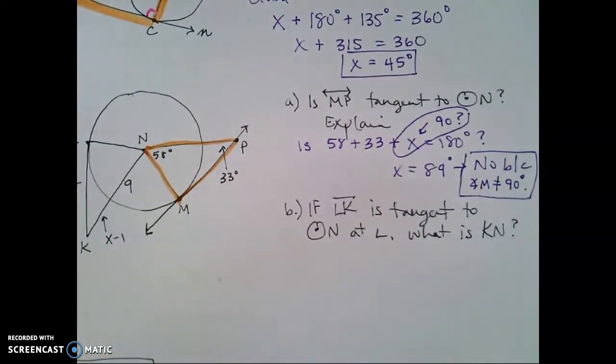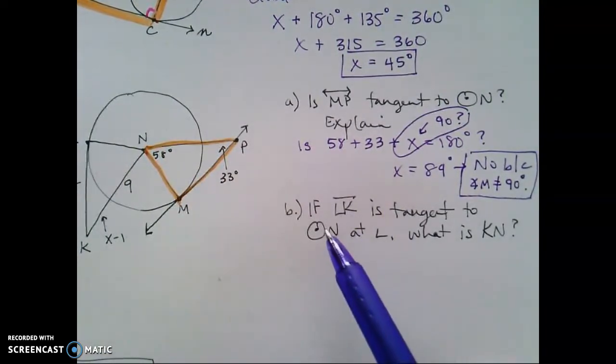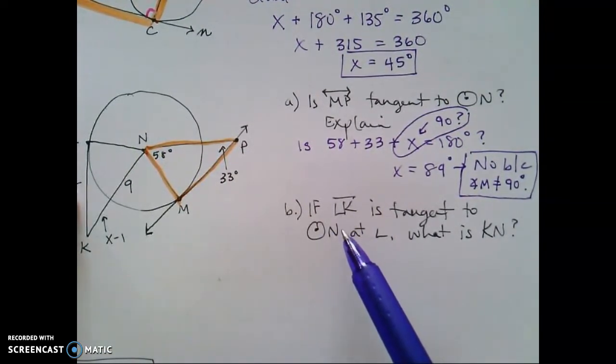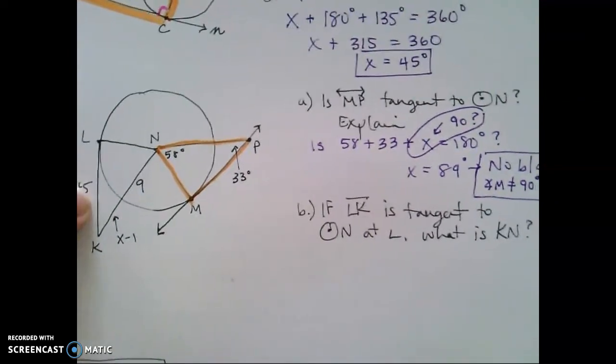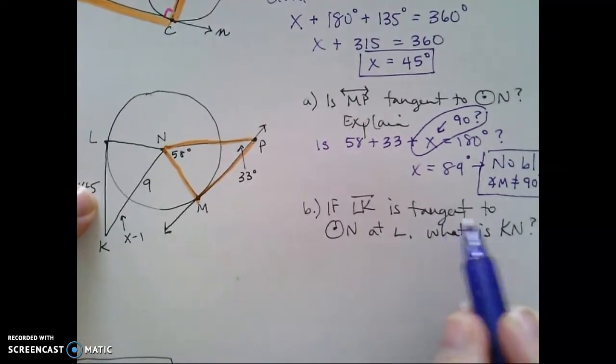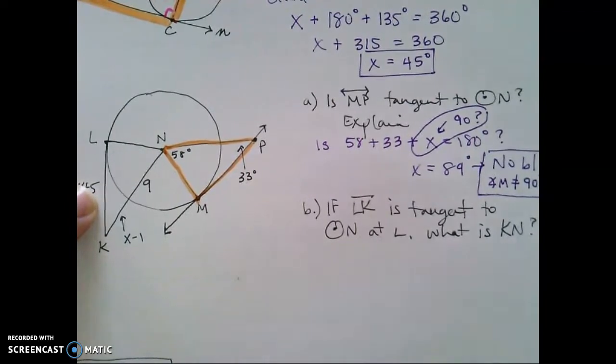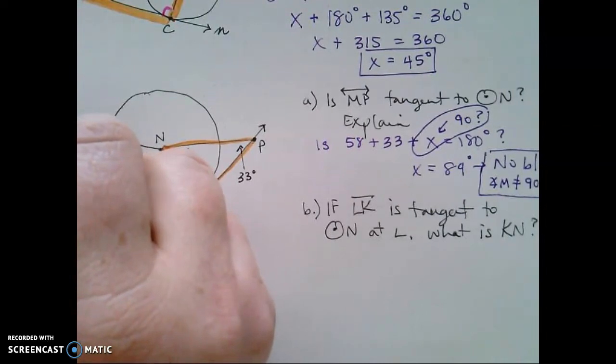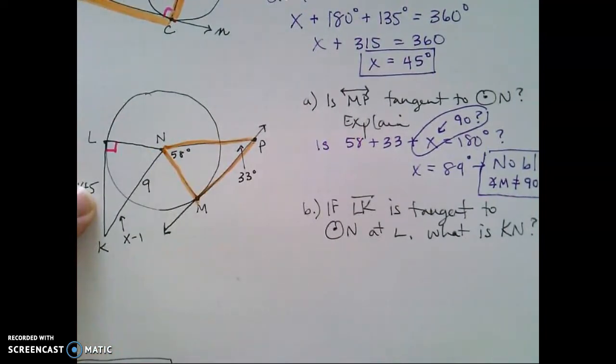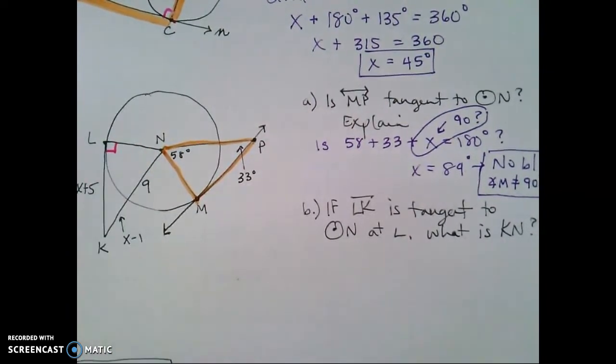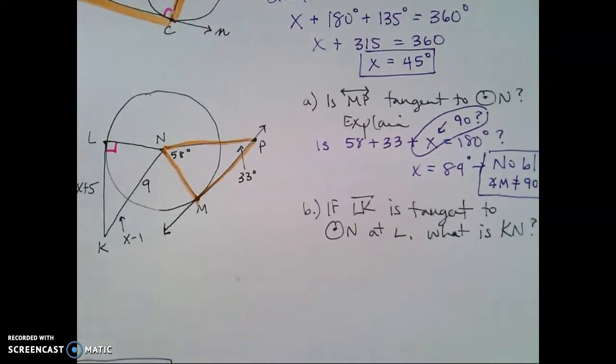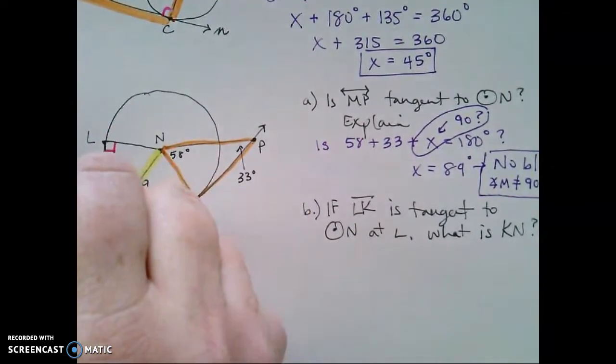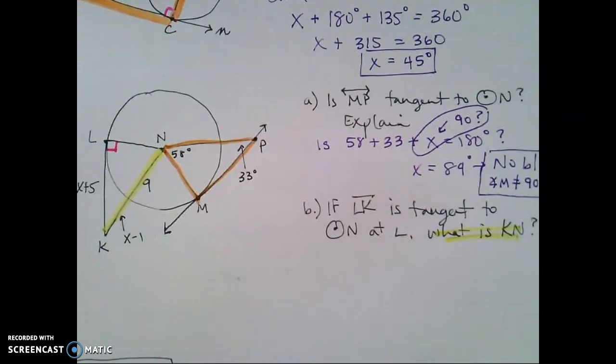So I've got my math there to help justify that conclusion. For part B, we're told if LK, if LK, and I'm pointing way over here, if LK is tangent to N, if LK is tangent to N, so if it is, that means this would be a right angle, then what is the value of KN? So that's our big question here. What is the value of KN? That's our question.